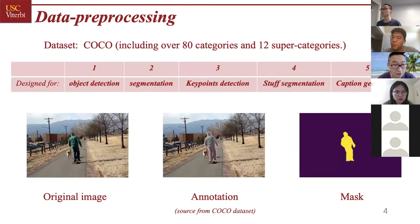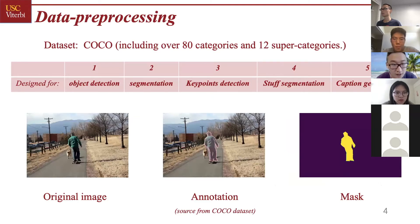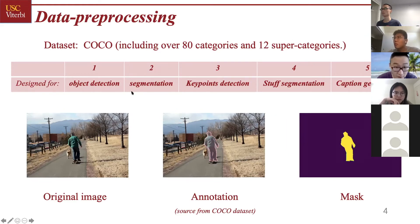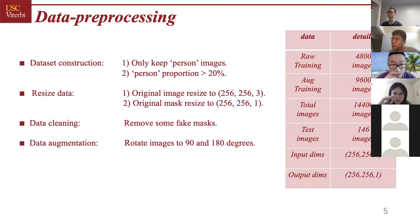Here, I will introduce a little bit about the dataset we are using — the COCO dataset. The COCO dataset is designed for five kinds of problems. We are based on the segmentation problem, and we actually do some data preprocessing here.